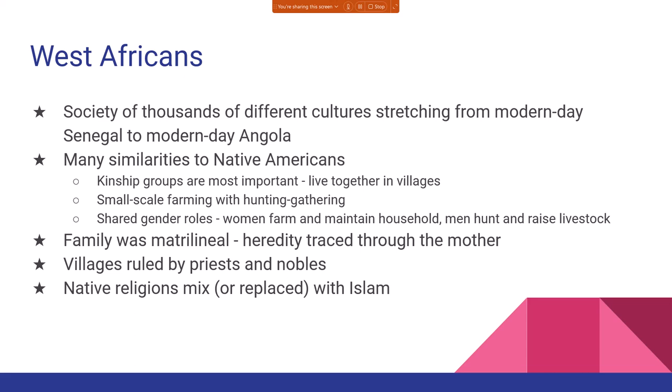In West Africa there is a native religion called animism, but it would be very much replaced or mixed with other religions — Islam in particular mixed with or in many cases replaced native West African religion. Something more familiar to many people is voodoo, which is actually a native West African religion mixed with Christianity, as is a Brazilian religion known as Candomblé. These native African religions mixed with other religions to create something new. That's the short view of what's going on before colonization — how these three separate cultures shaped up and how they would come together.